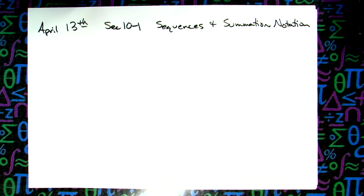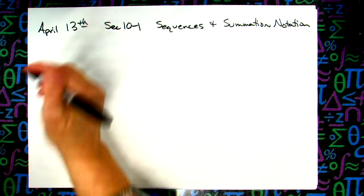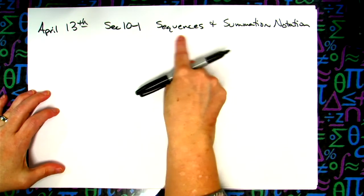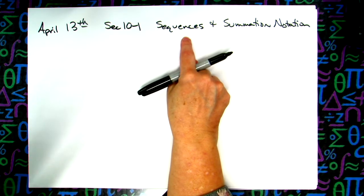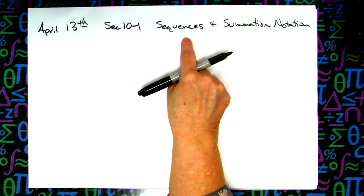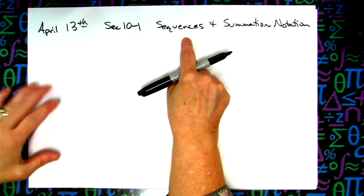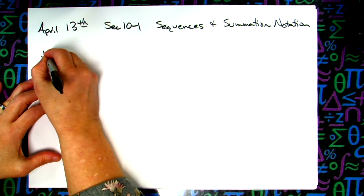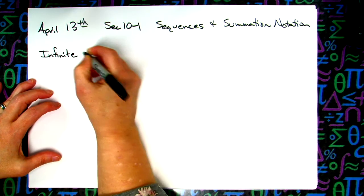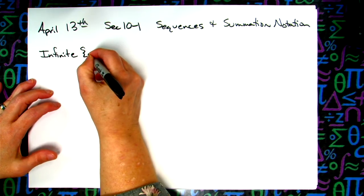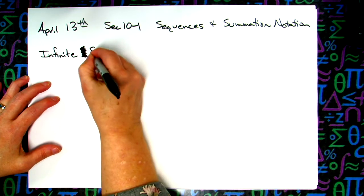You will have to memorize maybe some formulas or some ideas, but for the most part this is really pretty simple, straightforward stuff. We've talked about infinity before. A sequence would be a set of numbers like 2, 4, 6, 8, 10 — that's a sequence of numbers with commas in between them. We could have what we call an infinite sequence.